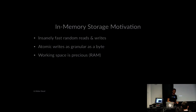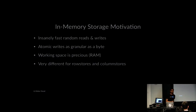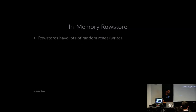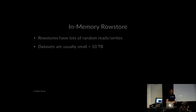In-memory row stores have a lot of random reads and writes — row stores are basically built to be very fast at those. Data sets for row stores are usually pretty small; for most Fortune 500 companies, row store workloads are less than 10 terabytes. So the solution is to keep the whole data set in memory. If we do that, we can use a data structure optimized very well for memory called a skip list. The big thing is that there are no pages, which enables you to implement a skip list lock-free — that's very significant.